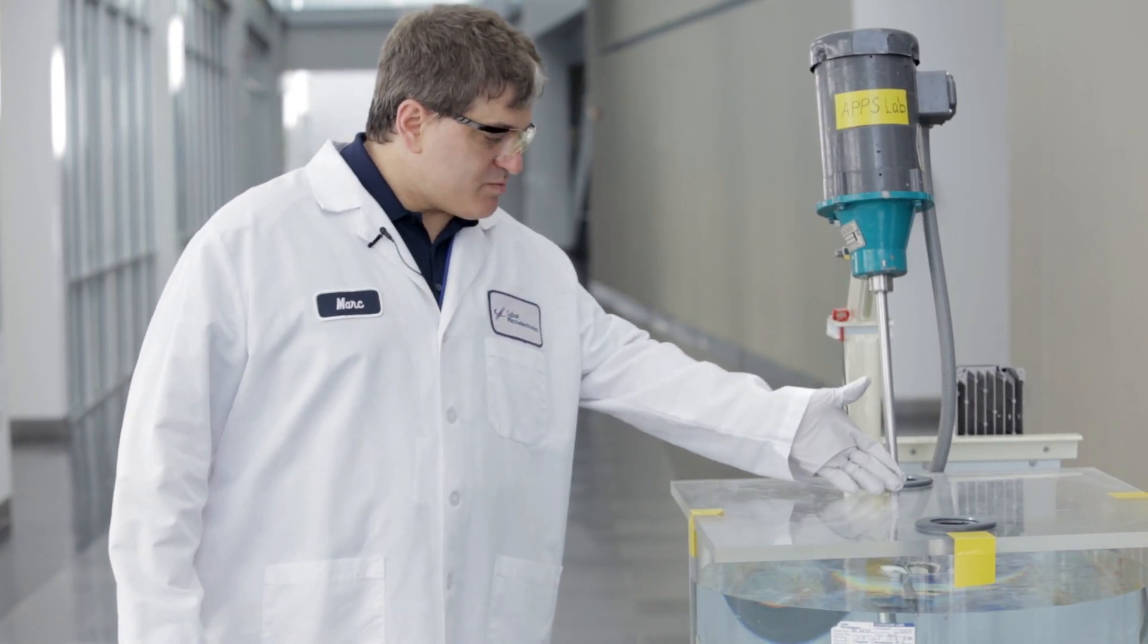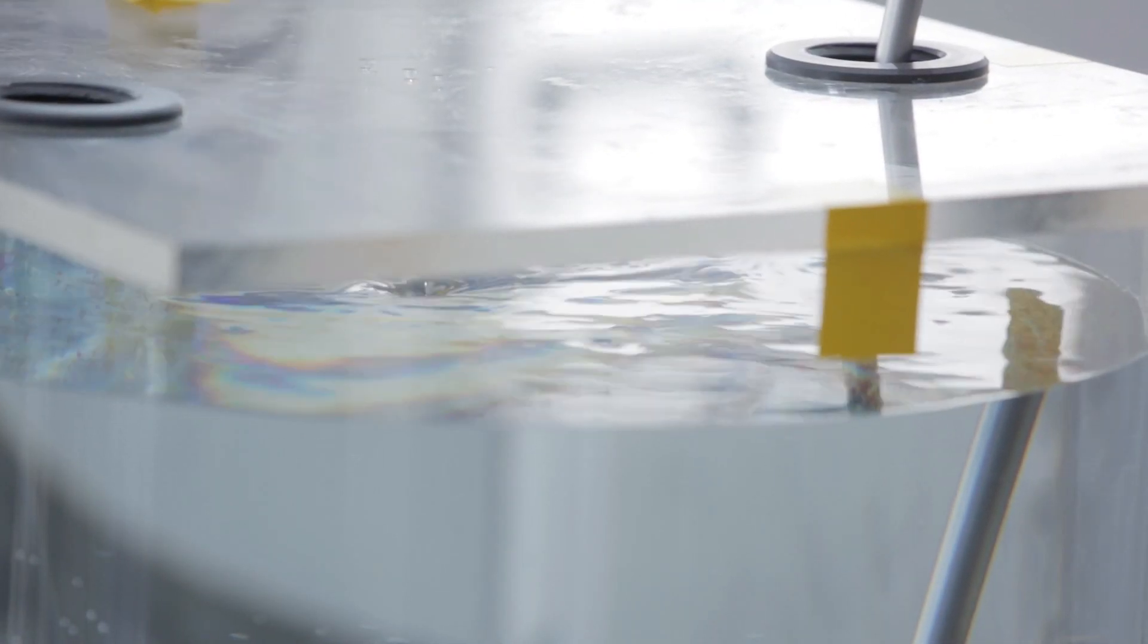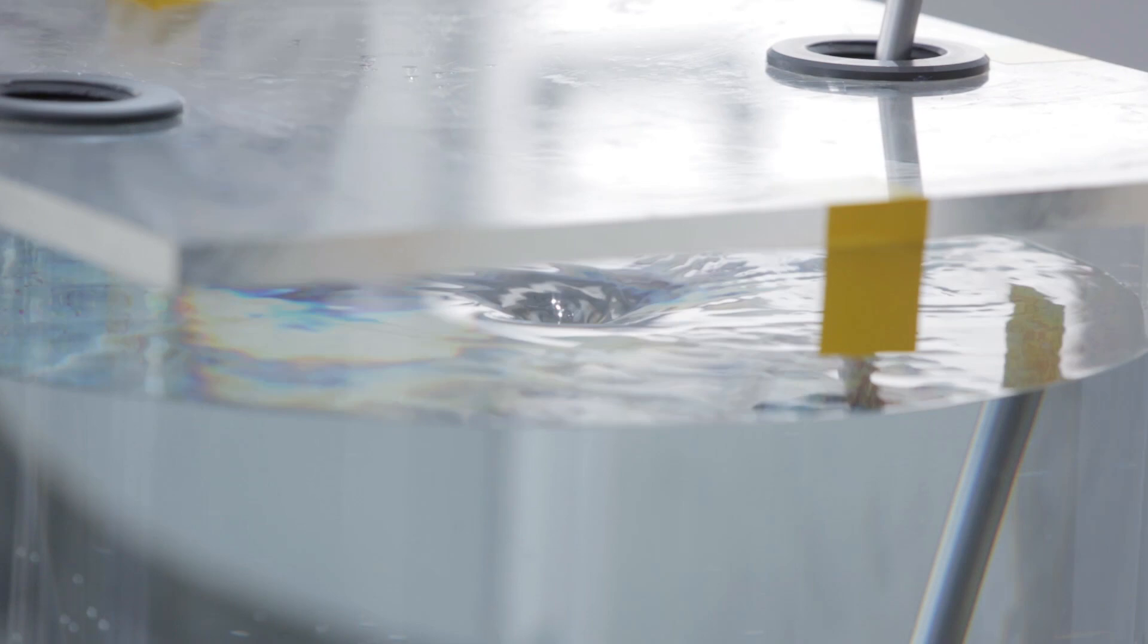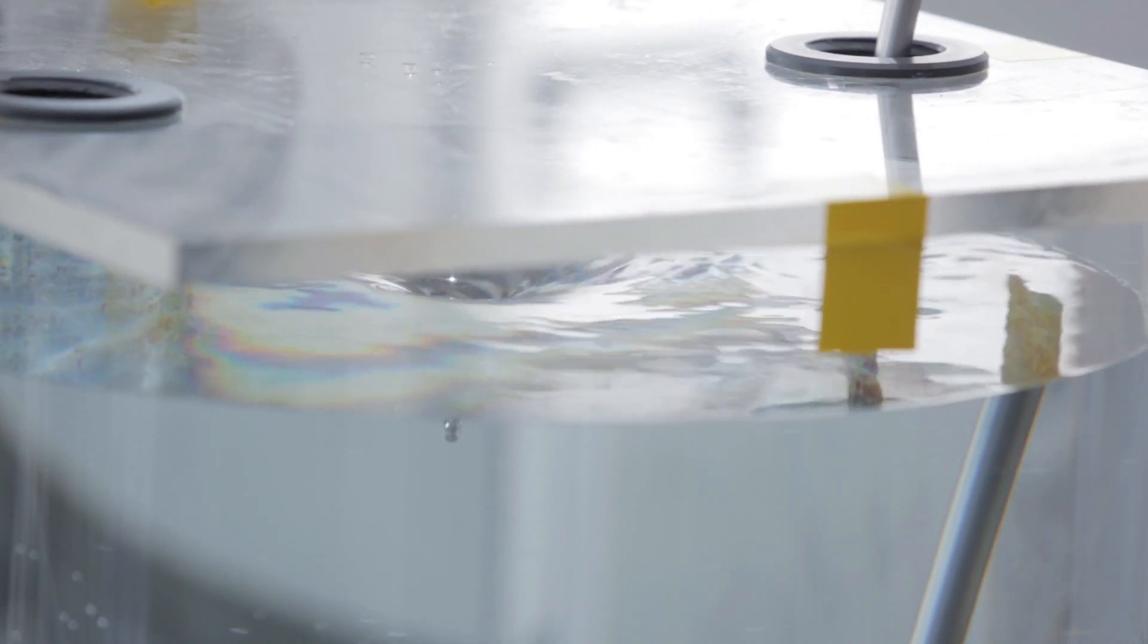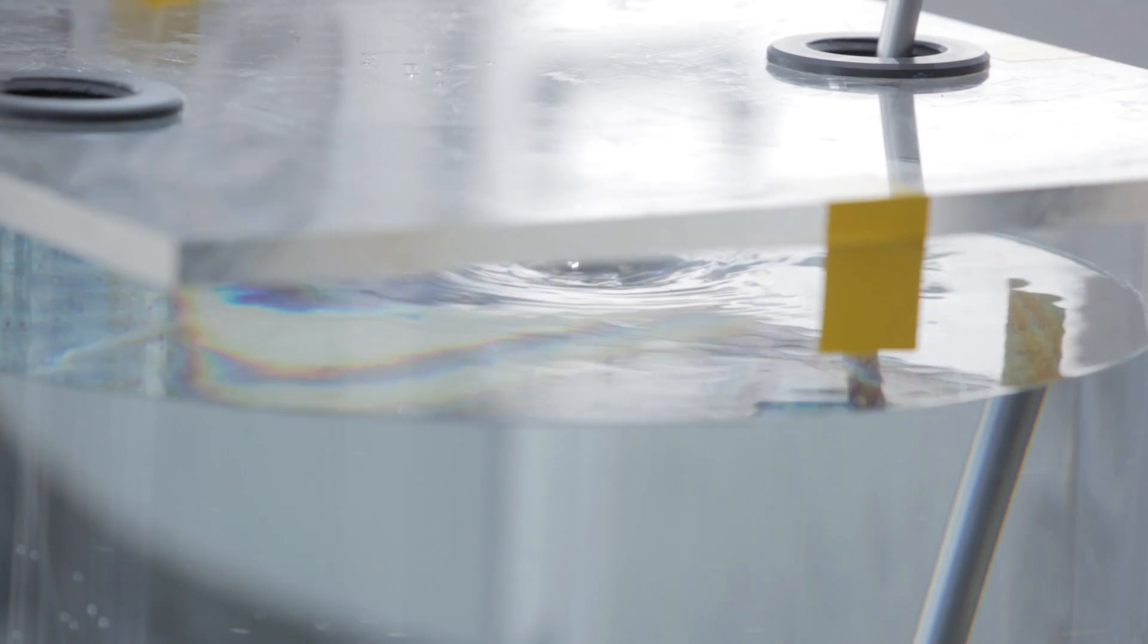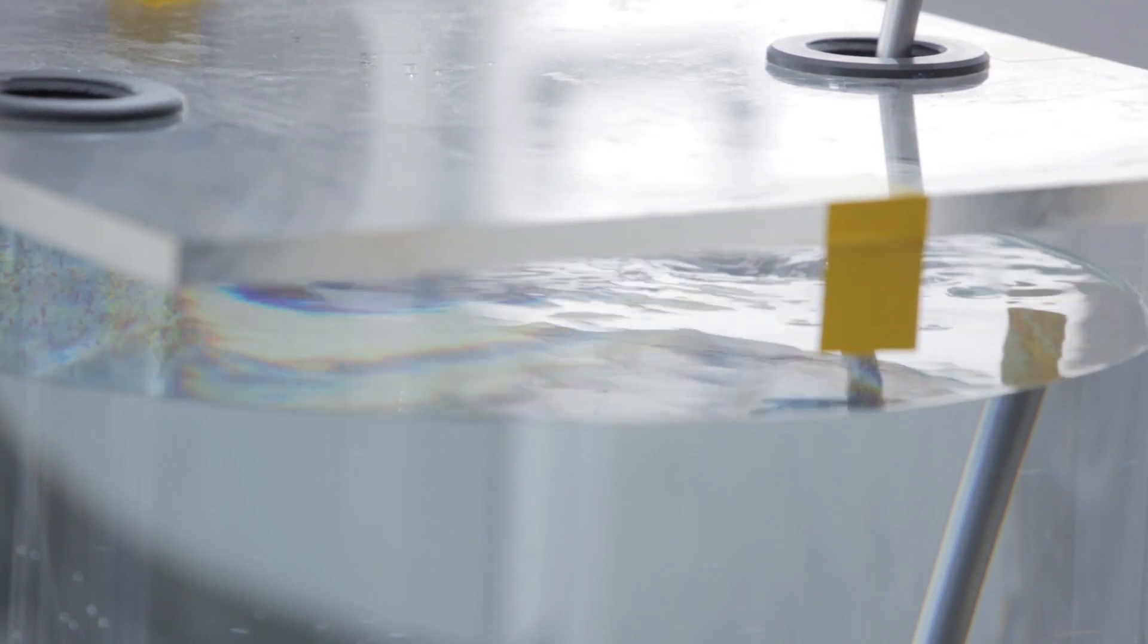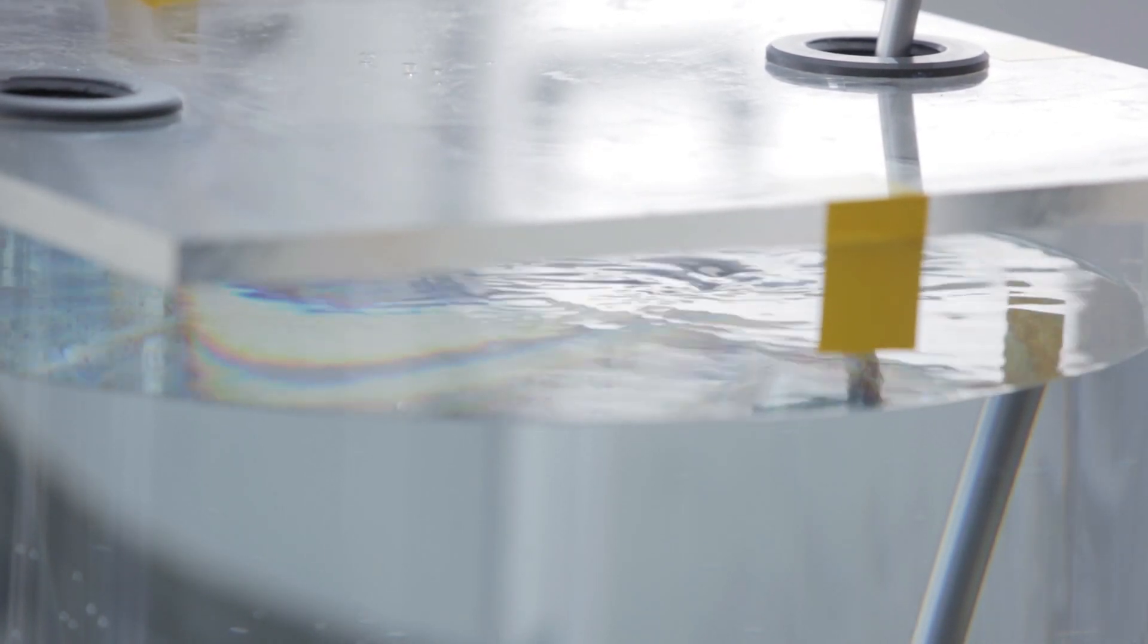If you look in here, you can see a small vortex forms, but it collapses on itself before it has a chance to suck air into the slurry. That's something that we really want to avoid having happen because it can damage the slurry, it can cause foaming, and in general, it's something we want to avoid at all costs.